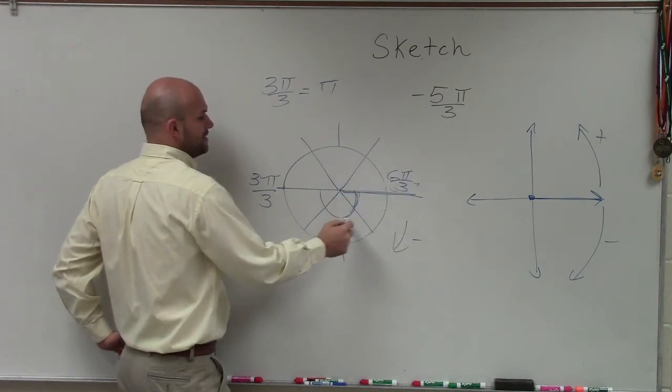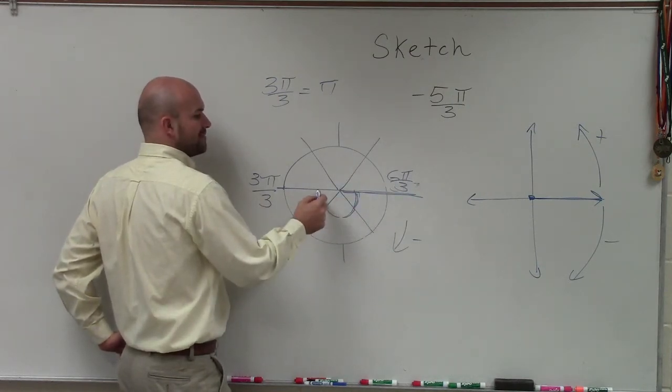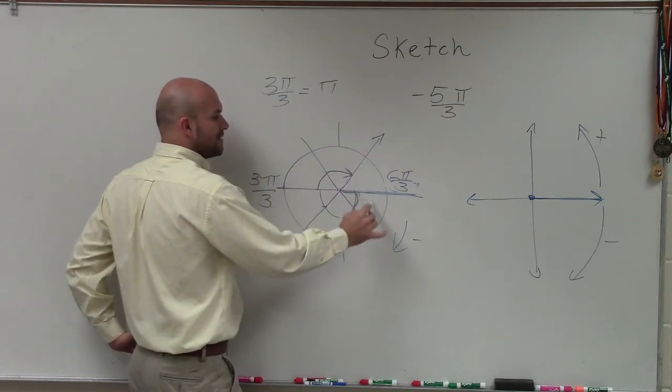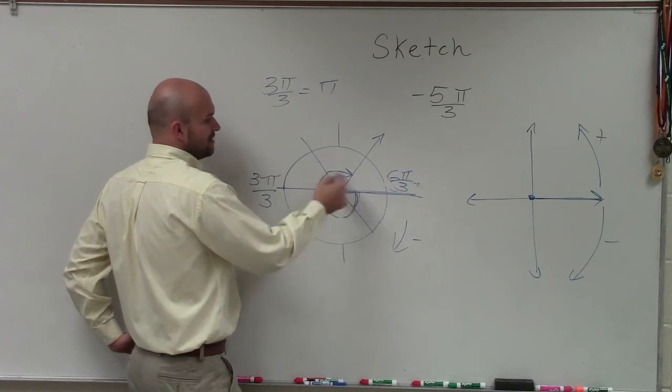So this would be negative π over 3, negative 2π over 3, negative 3π over 3, negative 4π over 3, and then negative 5π over 3. So I'm rotating a ray all the way around in the negative direction in this distance.